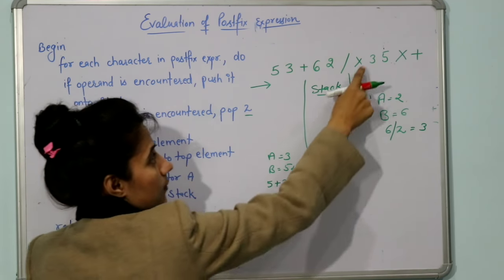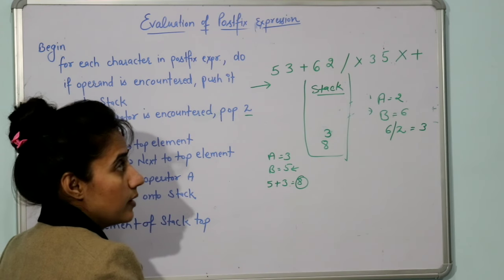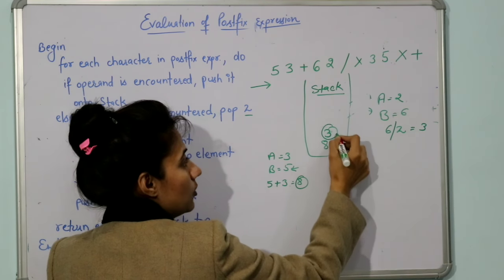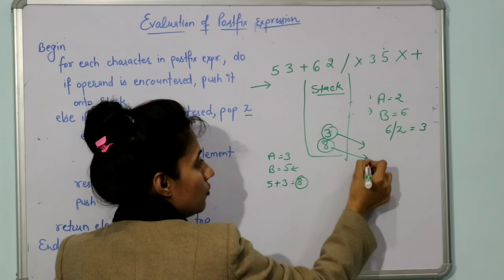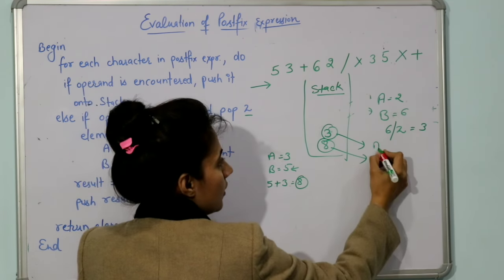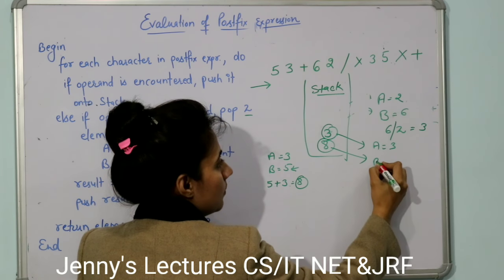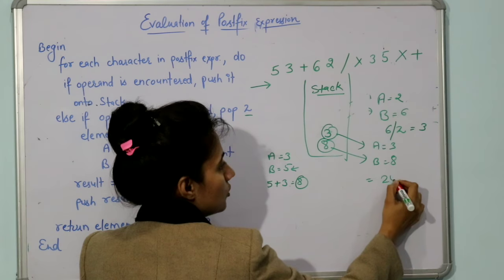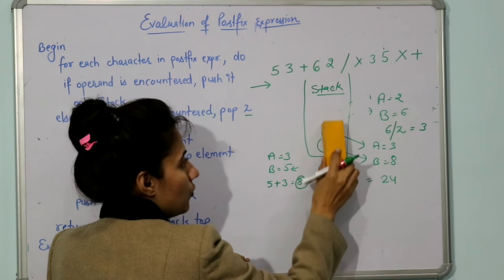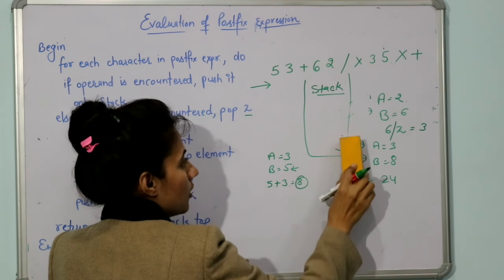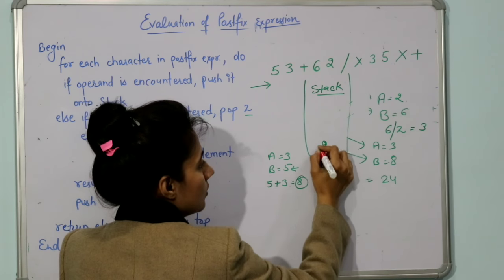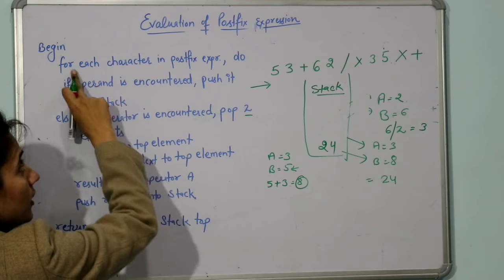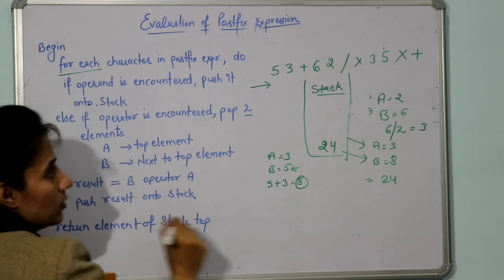Next is multiplication — operator — pop 2 elements: A = 3, B = 8. Result is B × A = 8 × 3 = 24. Push 24 onto the stack. This process is repeated for each character.